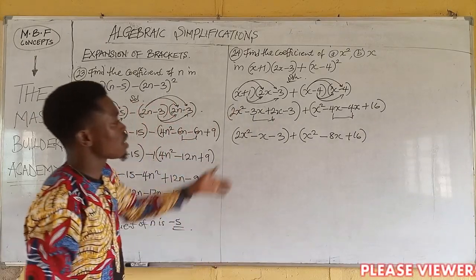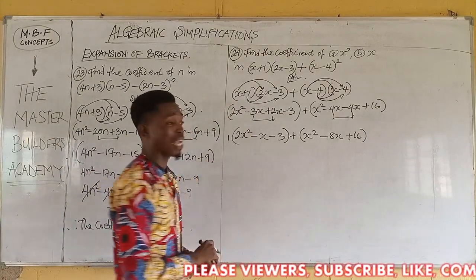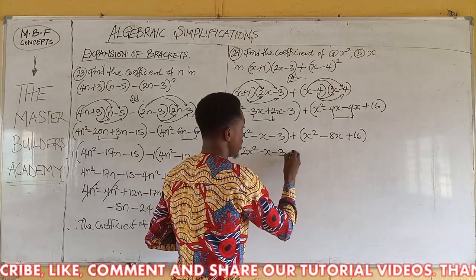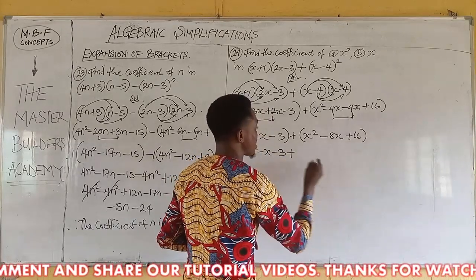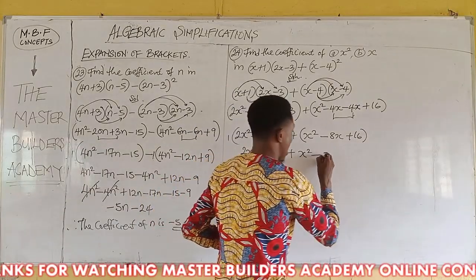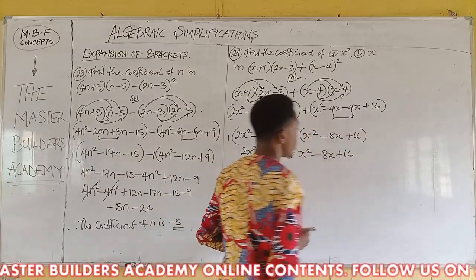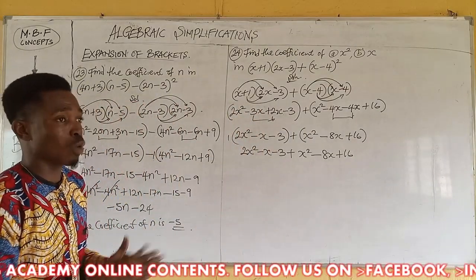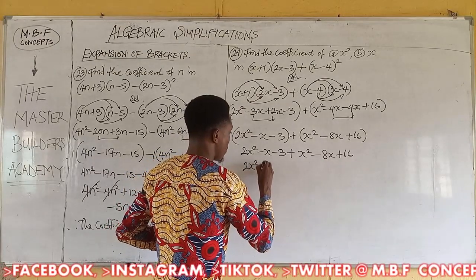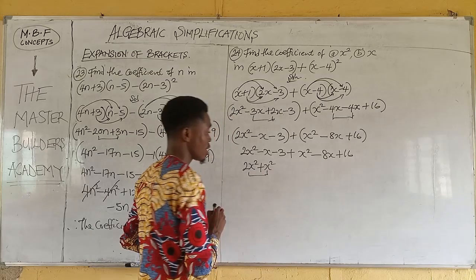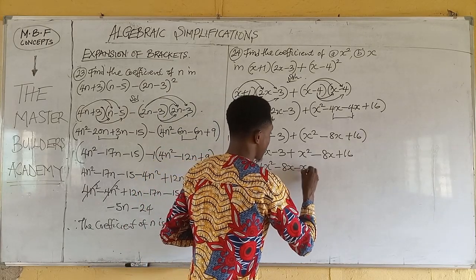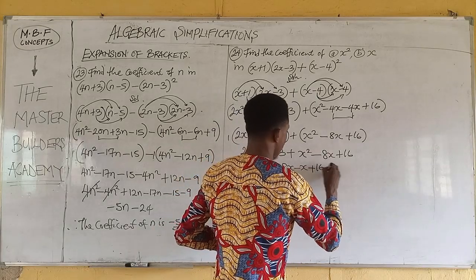Simplifying the middle terms: for the first bracket, minus 3x plus 2x gives minus x. So the first expansion gives 2x squared minus x minus 3. Then plus open bracket: minus 4x minus 4x gives minus 8x plus 16. The next thing is to remove the brackets. With coefficient 1 on the first bracket, everything remains the same. With plus 1 on the second bracket, signs remain unchanged. So we have: 2x squared minus x minus 3, plus x squared minus 8x plus 16.